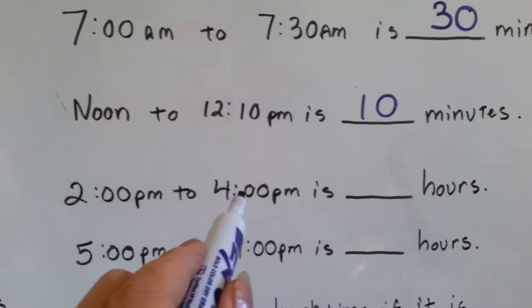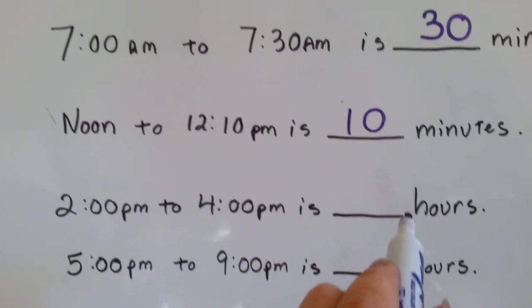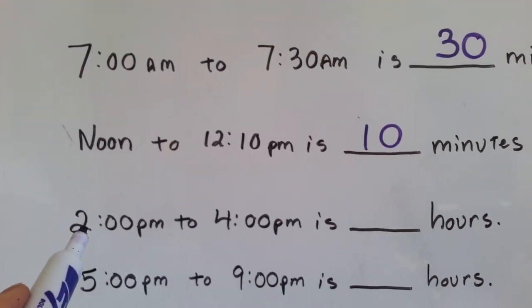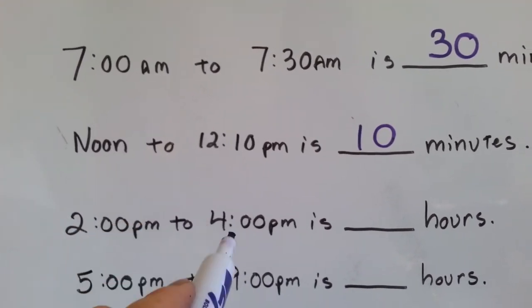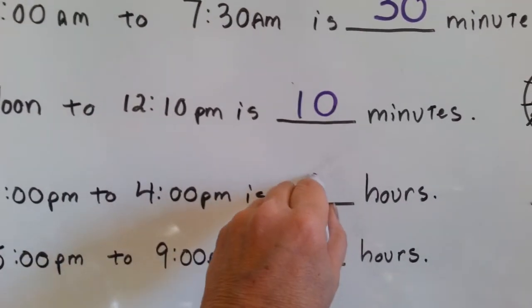From 2 p.m. to 4 p.m. is how many hours? 2 p.m., 3 p.m., 4 p.m. That's 2 hours.